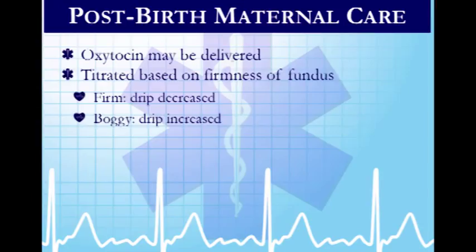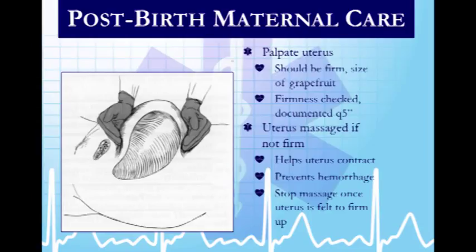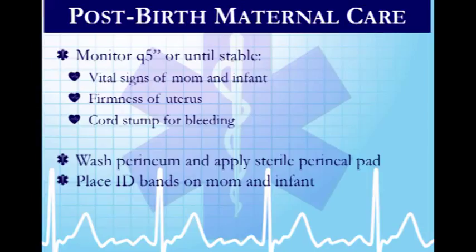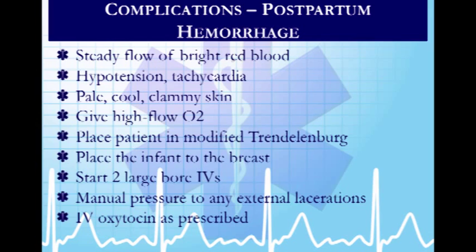Oxytocin may be administered to firm up the uterus. If the uterus is firm, the drip can be decreased. If it remains boggy, there is a risk for hemorrhage and the drip may be increased. The uterus should be about the size of a grapefruit after delivery. Firmness is checked every five minutes and massaged if not firm to prevent hemorrhage. Vital signs should be monitored until stable.